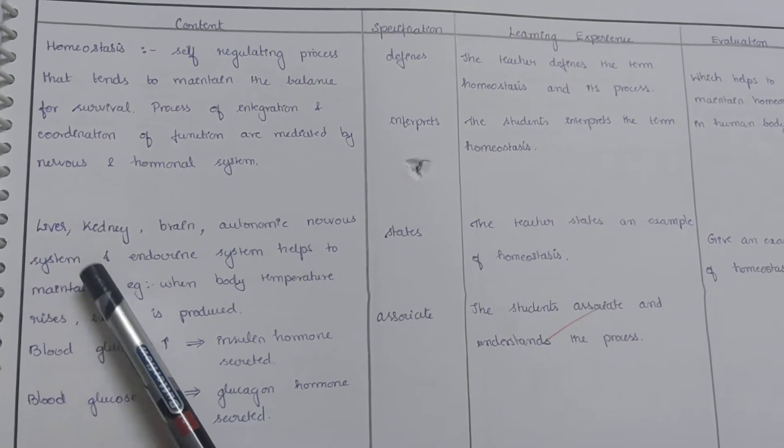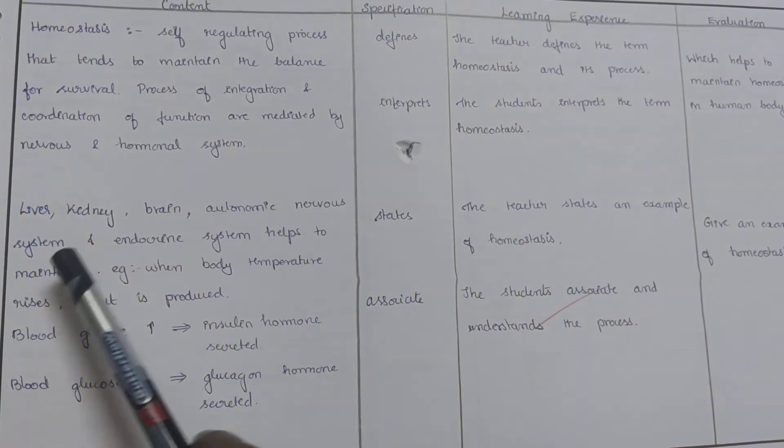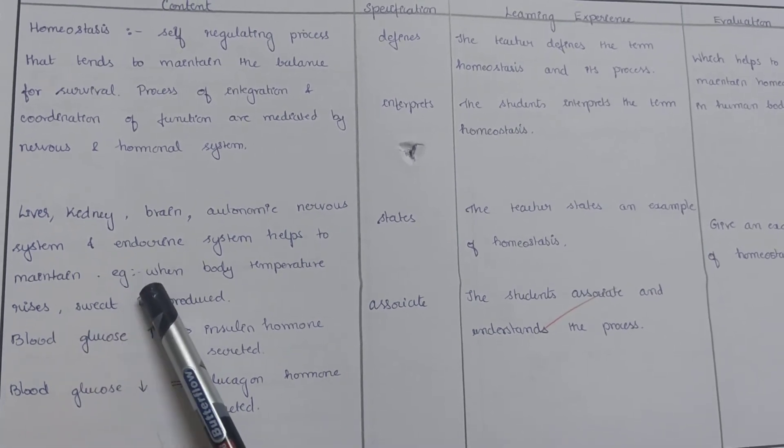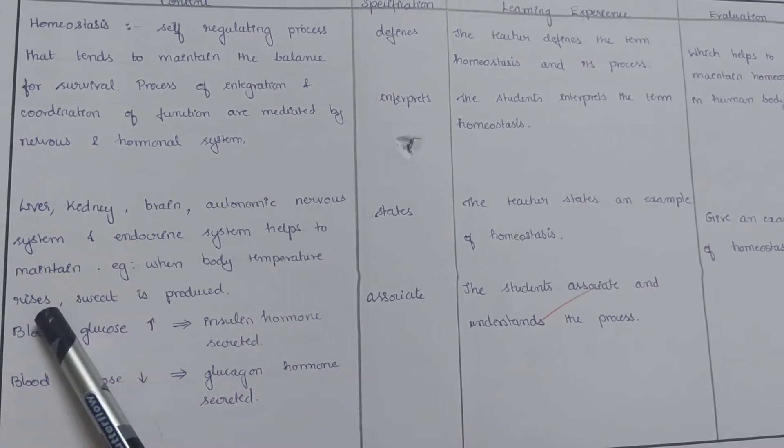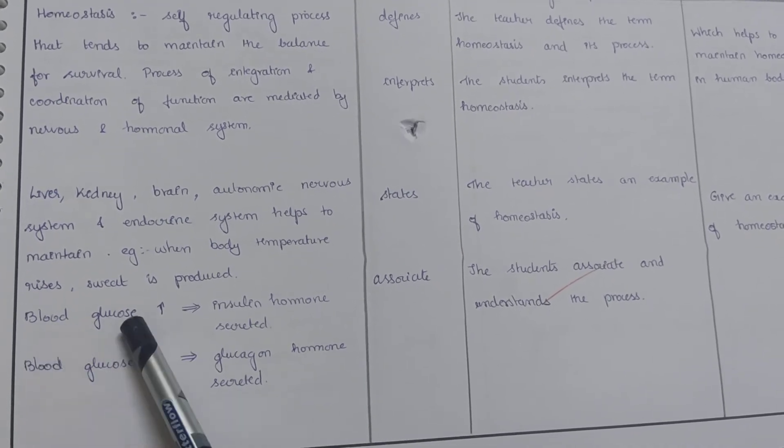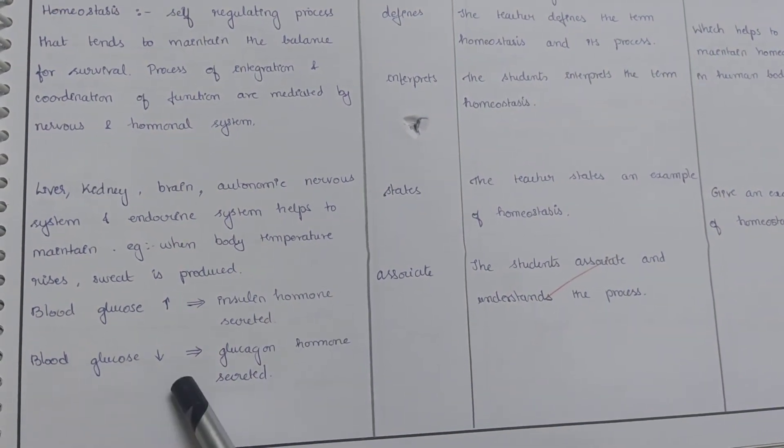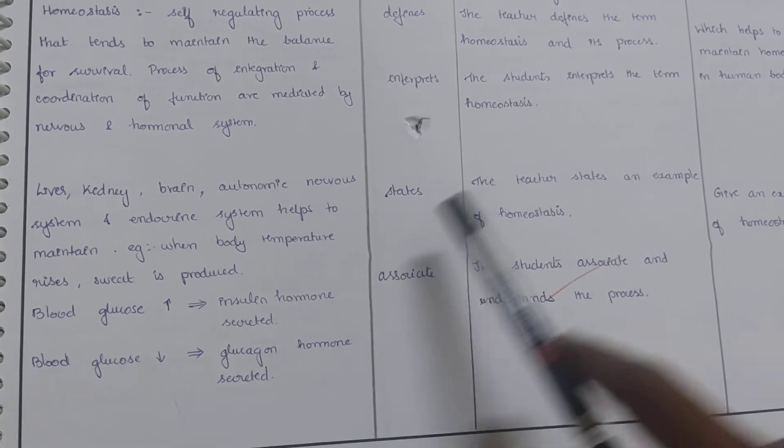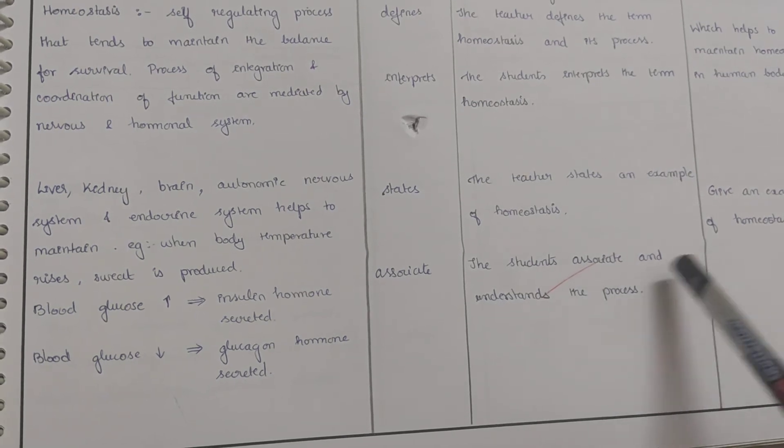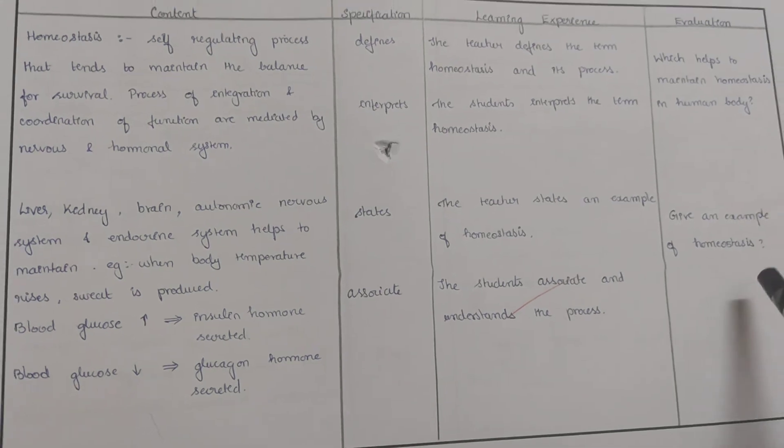Now we move on to the next content. Liver, kidney, brain, autonomic nervous system and endocrine system helps to maintain. Example: when body temperature rises, sweat is reduced. We explain by saying blood glucose when it increases, insulin hormone is secreted. Blood glucose when it decreases, glucagon hormone is secreted. The teacher states an example of homeostasis and the student associates and understands the process. Give an example of homeostasis.